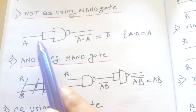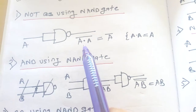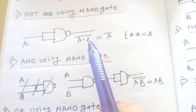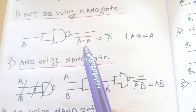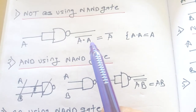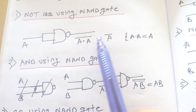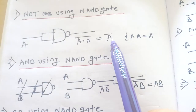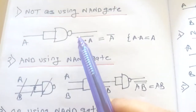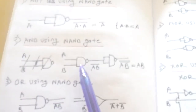For the NOT gate, if you tie both the inputs and give a single input to the NAND gate, the output is A·A bar. As per Boolean laws, A·A equals A, so this simplifies to A bar. So this is your NOT gate using NAND gate.